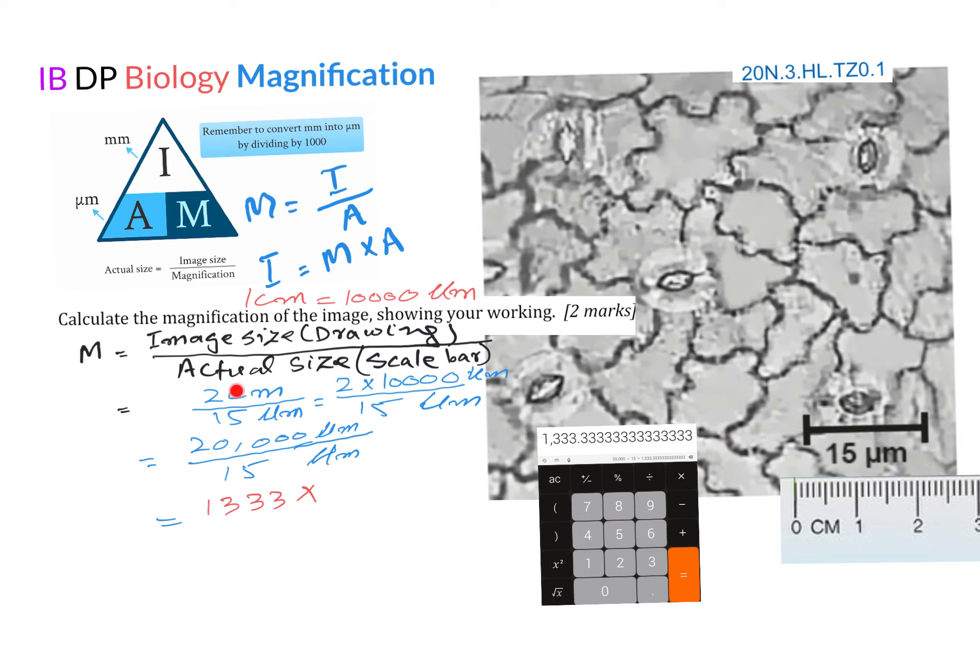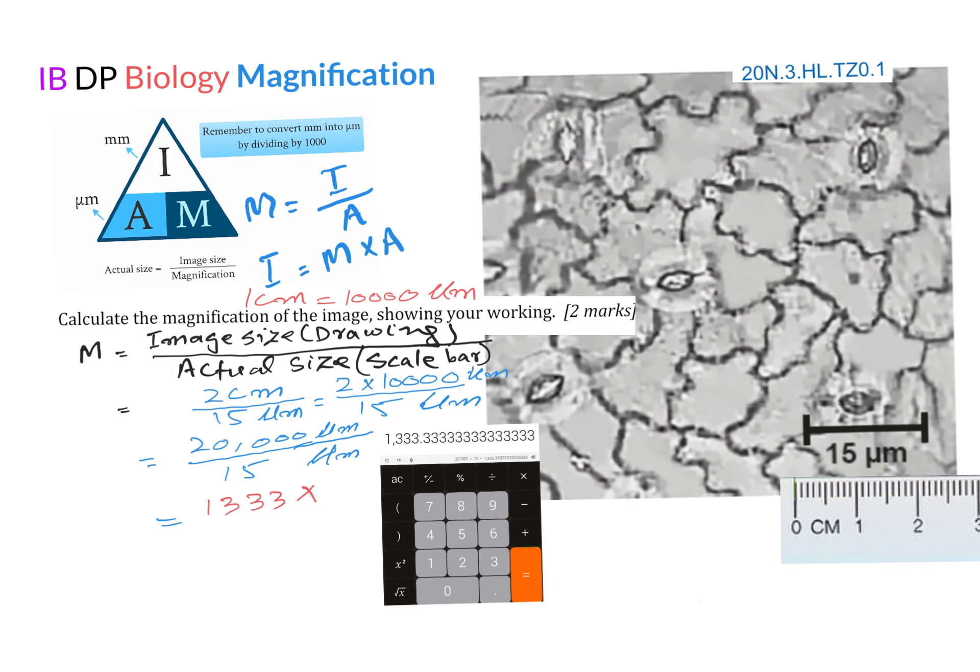But no, we have to stop here and make these units similar. You can convert micrometers into centimeters or centimeters to micrometers. In this question, we are converting centimeters into micrometers. Do remember, one centimeter is equal to 10,000 micrometers.